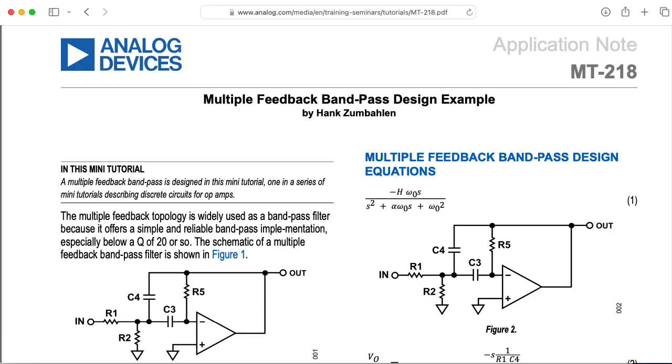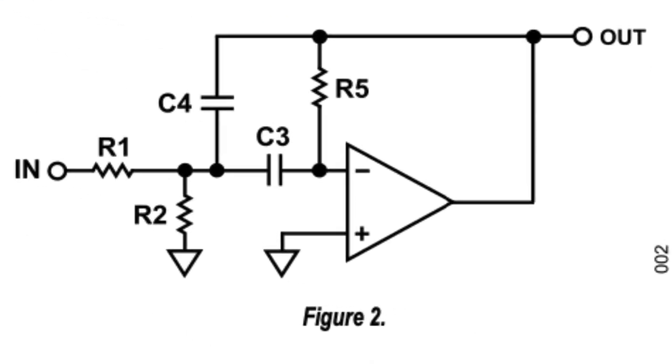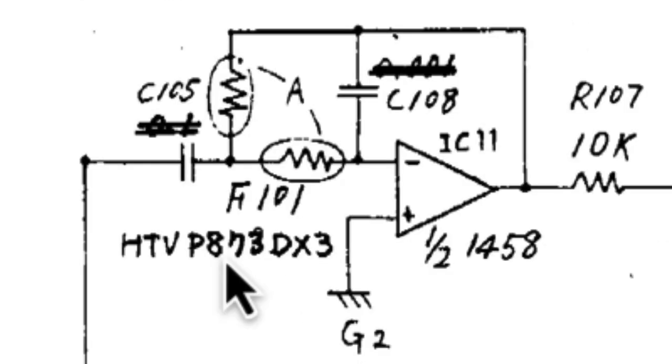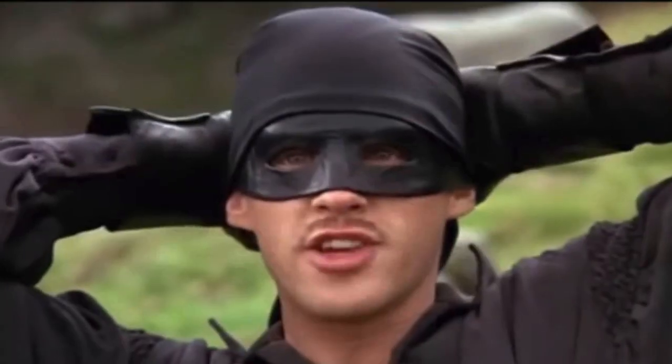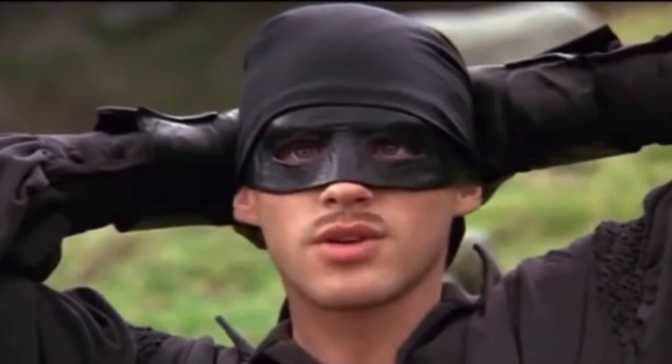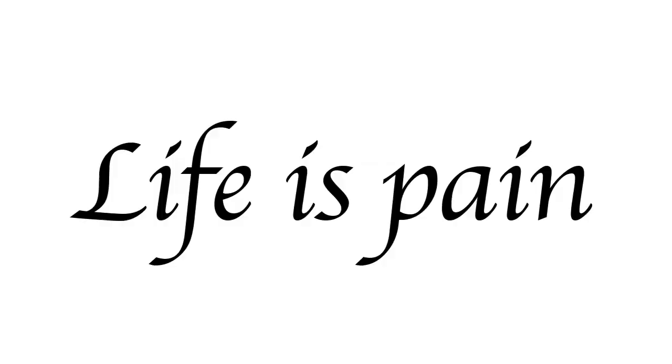If you take a standard multiple feedback bandpass topology and get rid of this resistor here and then swap the roles of the remaining resistors and capacitors, you get the Korg PS3300 resonator topology. But again, that particular topology, I haven't seen that anywhere. So we're going to have to compute the transfer function from scratch.